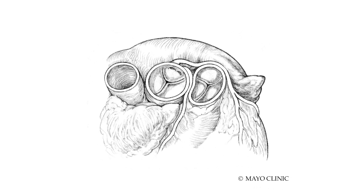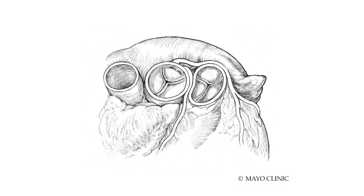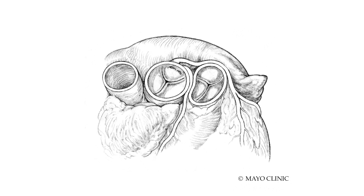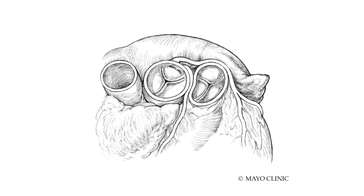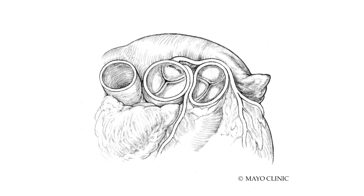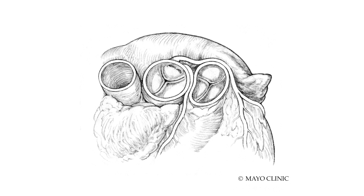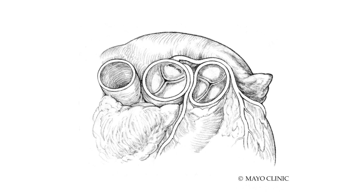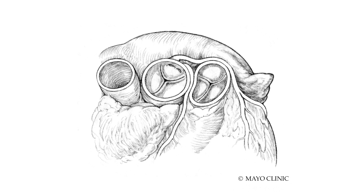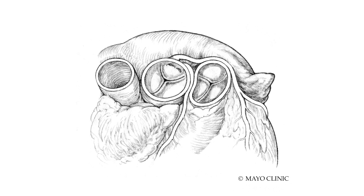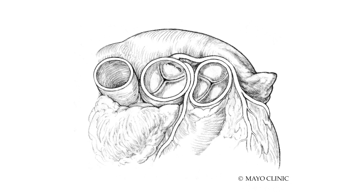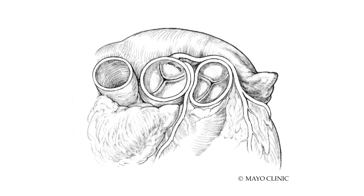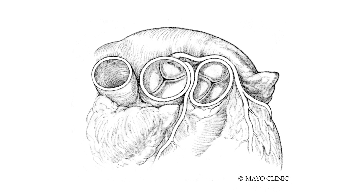Anomalous aortic origin of the coronary artery is when one of the coronary arteries does not arise directly off the aorta in the normal manner. Rather, it arises from a different area and then courses through the aortic wall and often between the pulmonary artery and aorta.